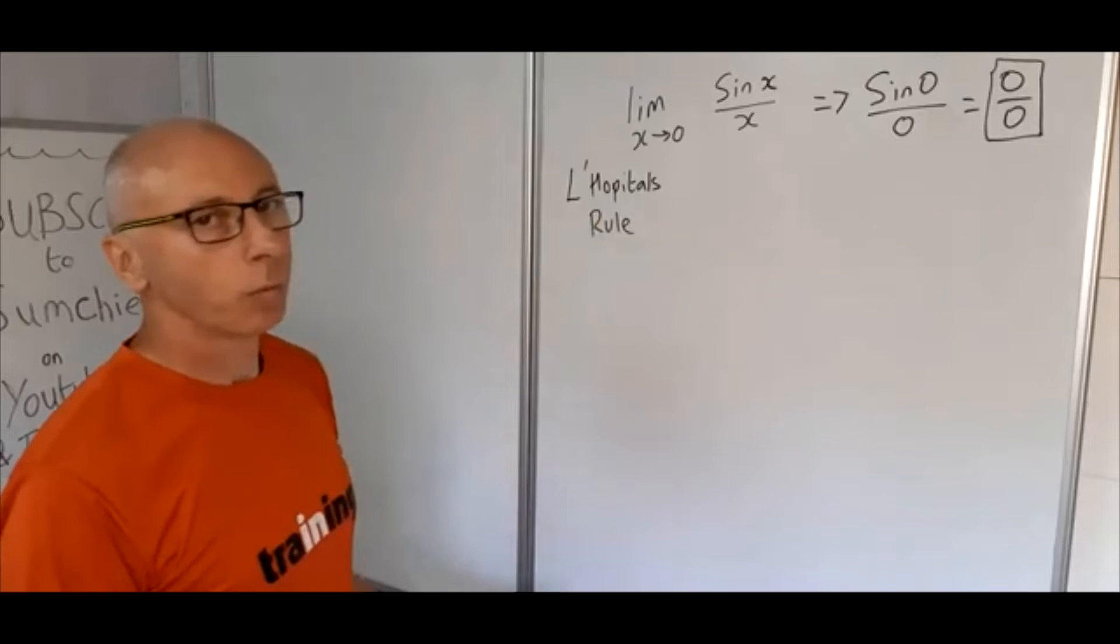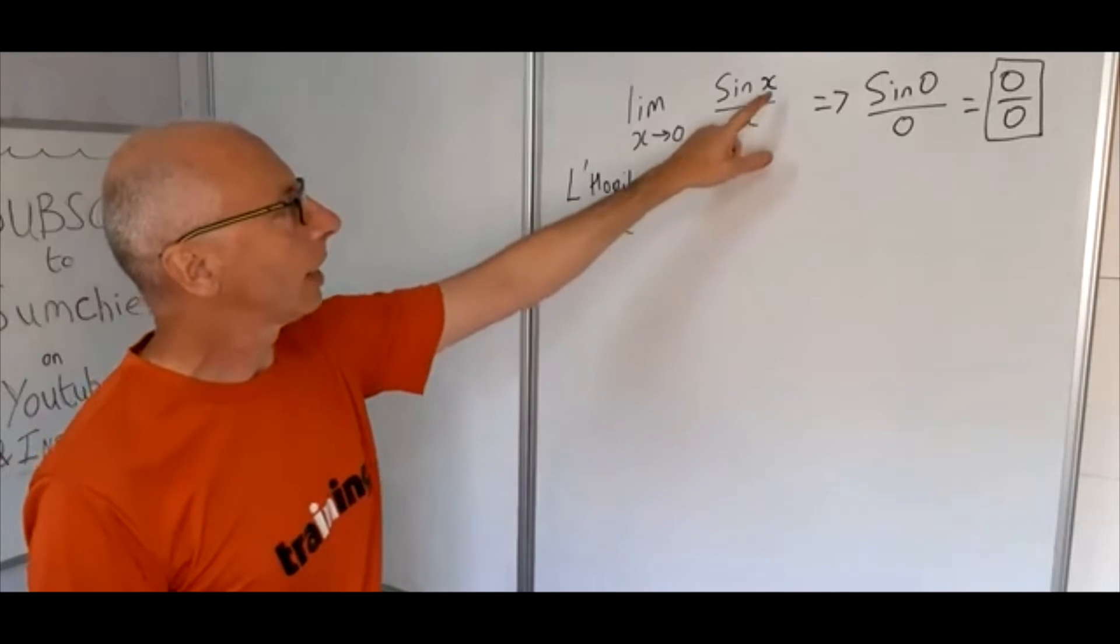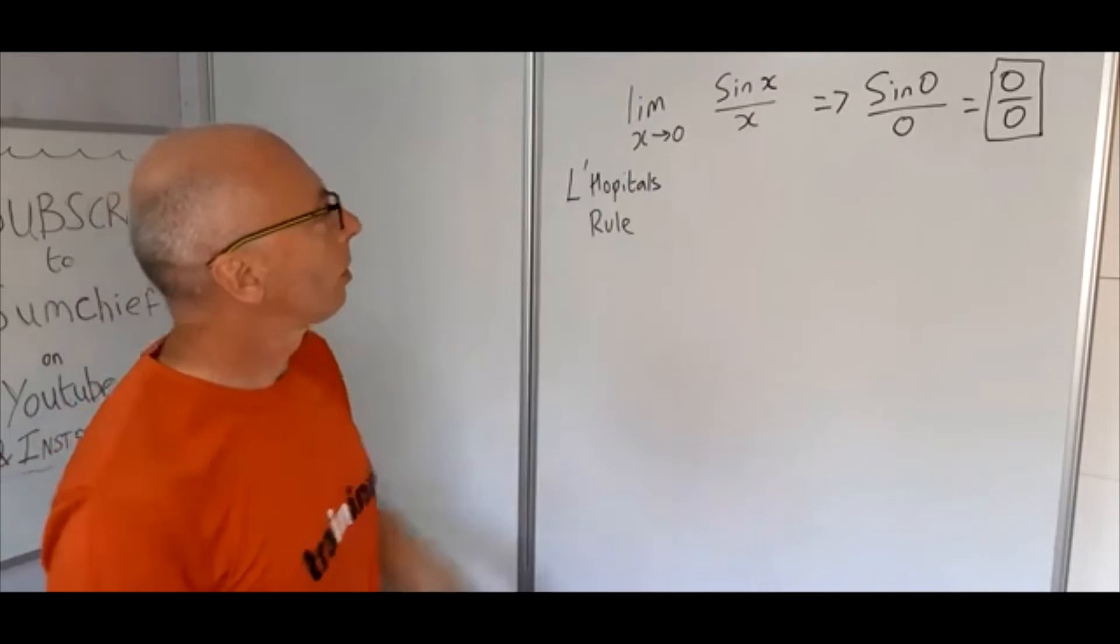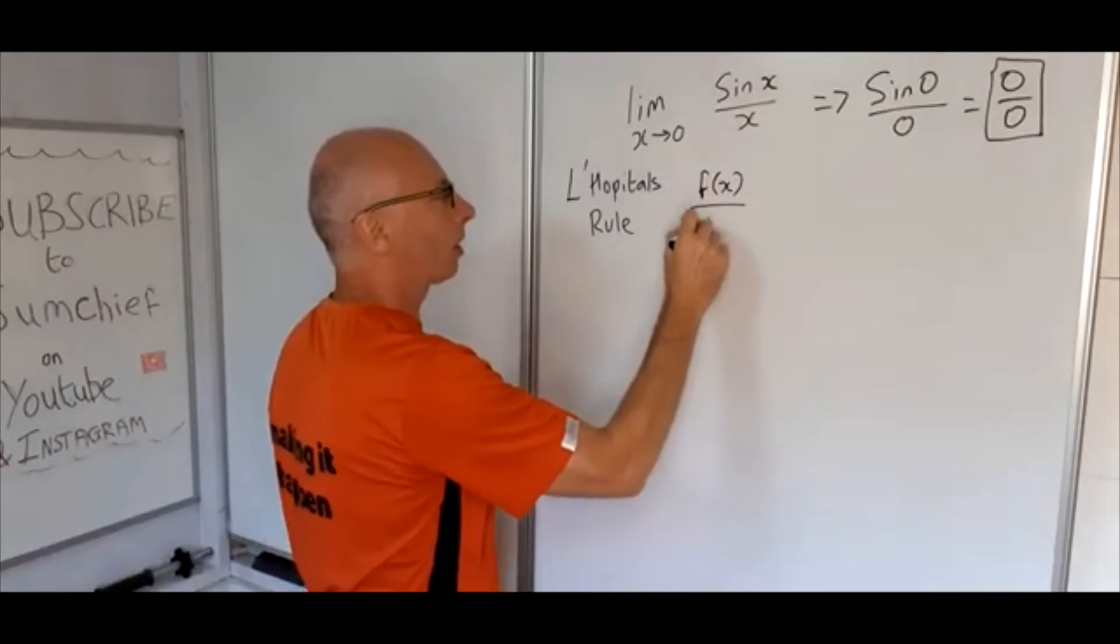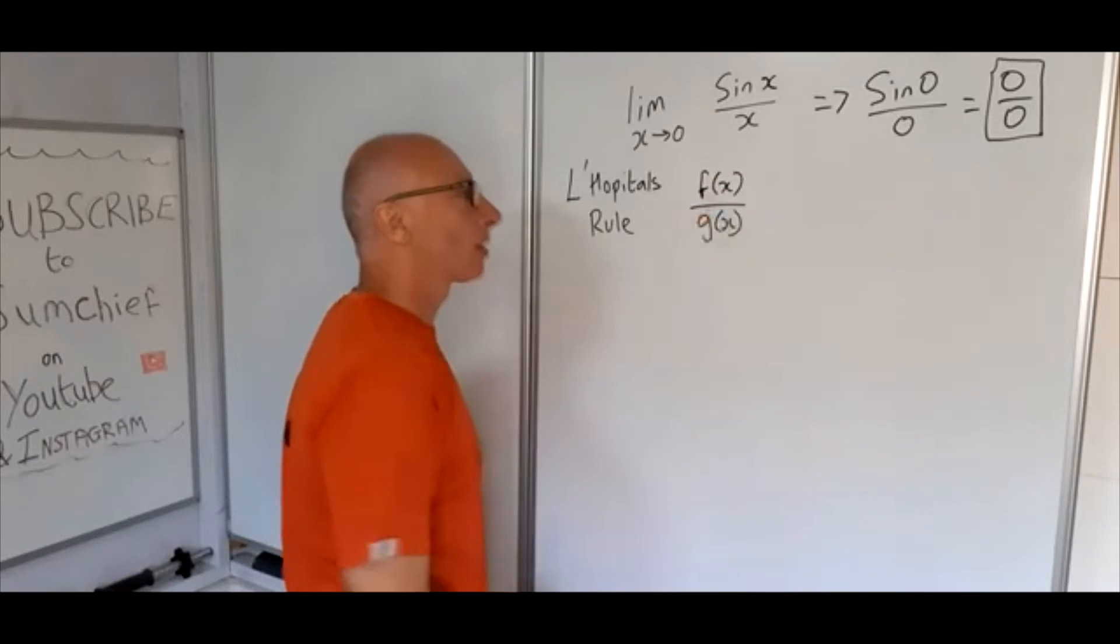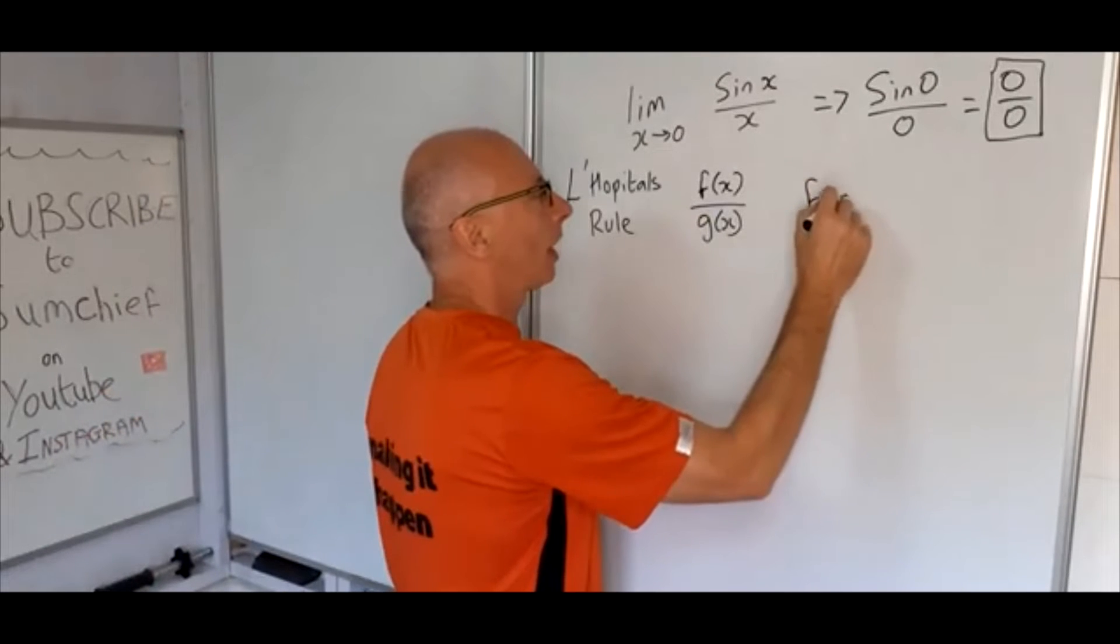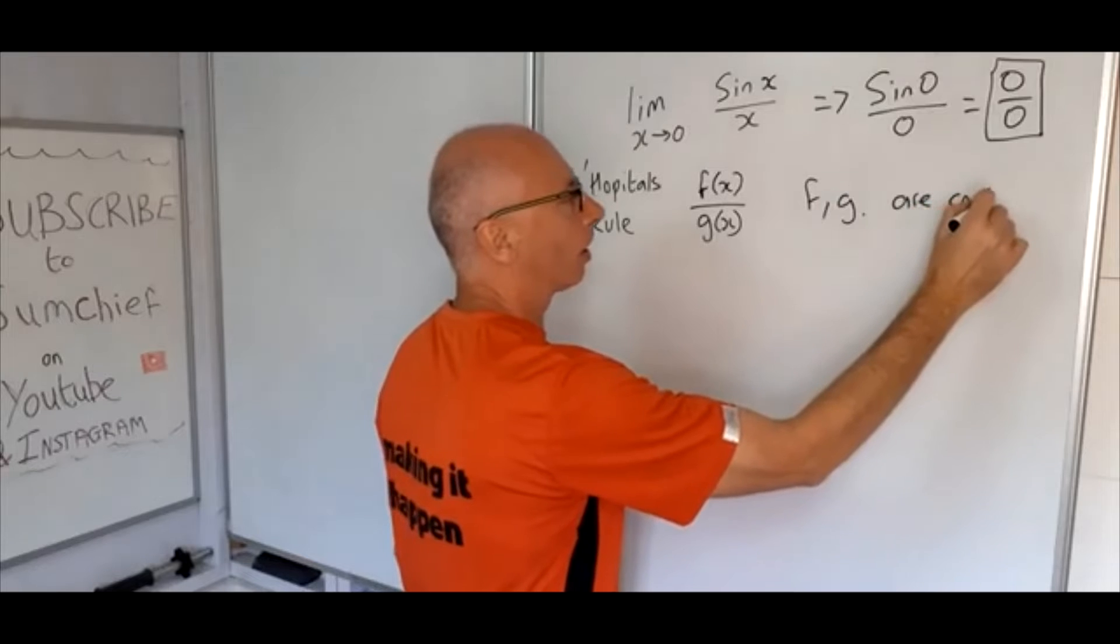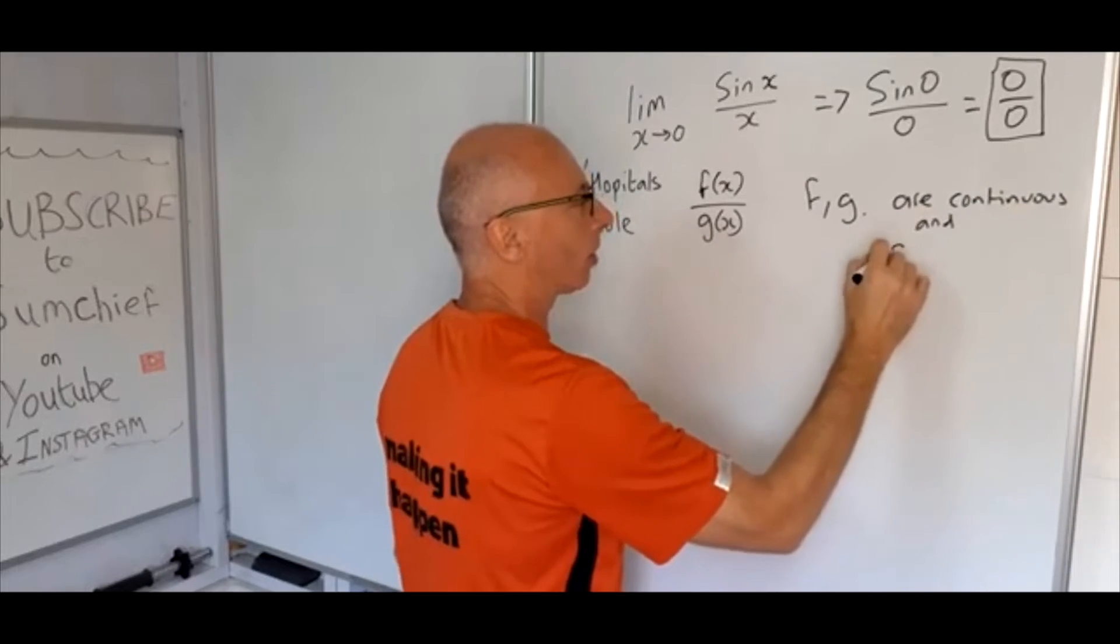Okay, so what L'Hôpital's rule wants from you is to find out that this function and this function, so we'll call that f of x over g of x. What we need is that f and g are continuous and you can differentiate.